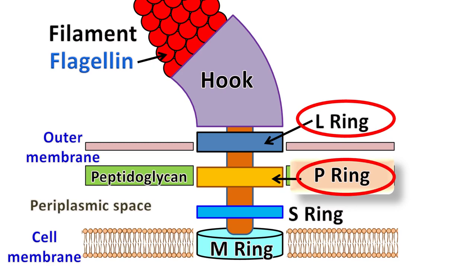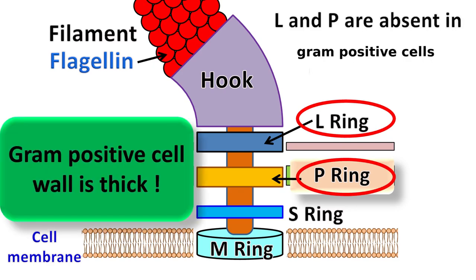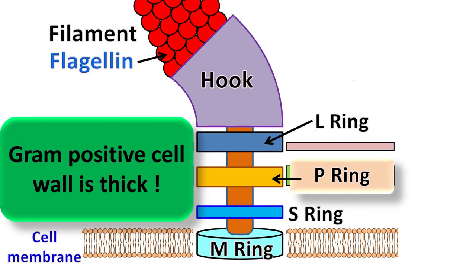The L-ring and P-ring are absent in gram-positive cells. Also, in the case of gram-positive cells, the S-ring is attached to the cell wall and it does not rotate.